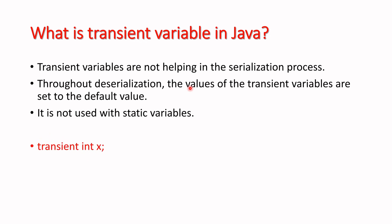You may have seen code like 'transient int x' or 'transient String name'. So now you are aware of the transient keyword as well as transient variables. The transient keyword is used to make a transient variable — like I have already shown you here, we have an integer x, and before the int data type we have written the keyword transient.